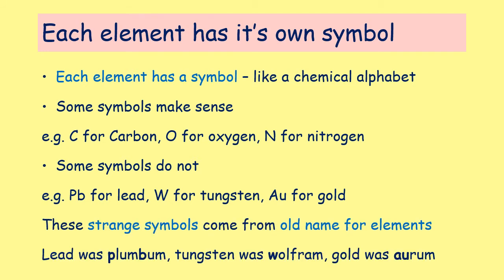For example, lead used to be called plumbum, and that's where we get PB from. It's also where we get the word plumber from, because water pipes used to be made of lead — they're not anymore because we know it's not safe. Tungsten used to be called wolfram, and that's where the W comes from. Gold was aurum, and that's where we get AU from. Some symbols make sense immediately; others you just need to remember.